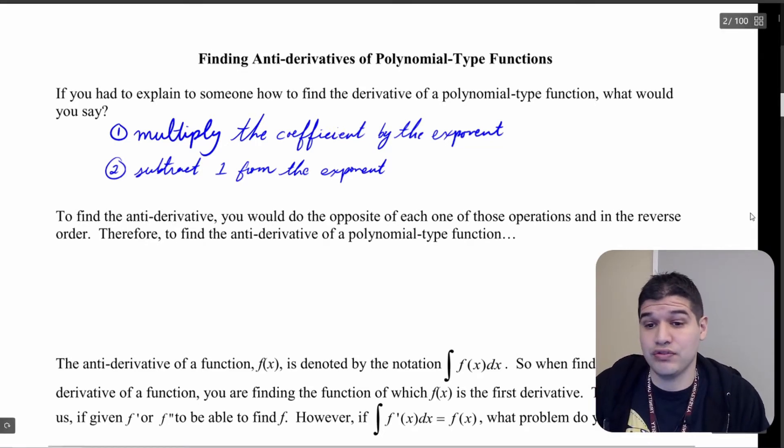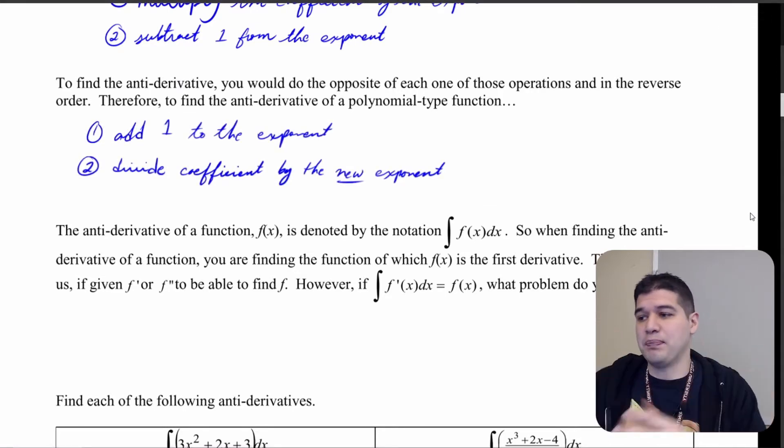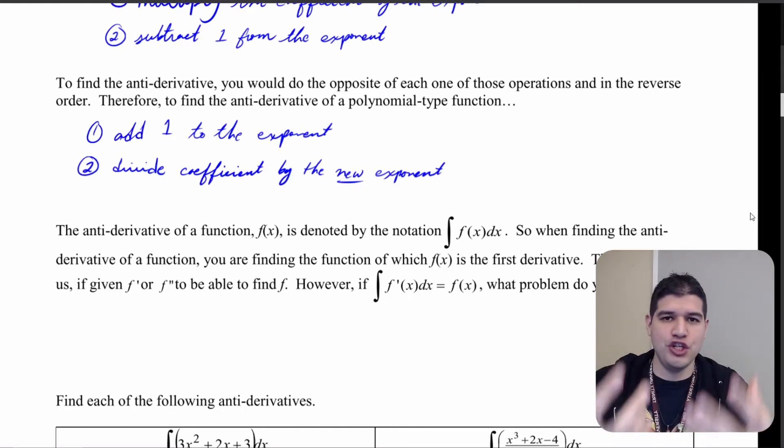When we're talking about antiderivatives, in order to find the antiderivative you just go in that opposite direction. You're going to add 1 to the exponent and then divide the coefficient by that new power.